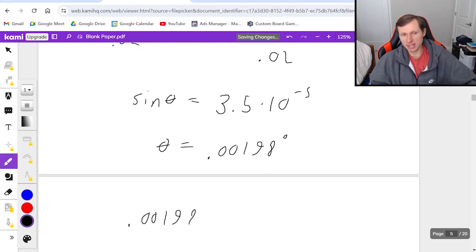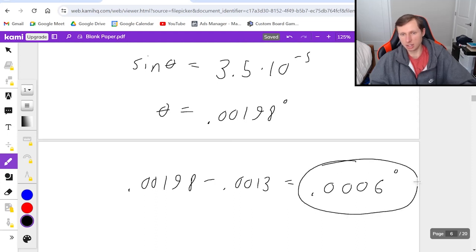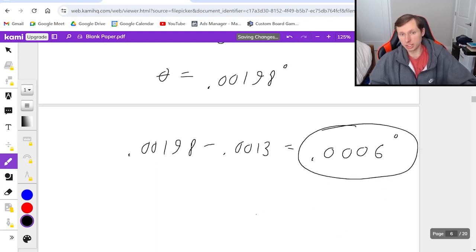The final answer is 0.00198 - 0.0013 = 0.0006 degrees. Or using all the digits in my calculator: 0.0006611 degrees, which is also correct.